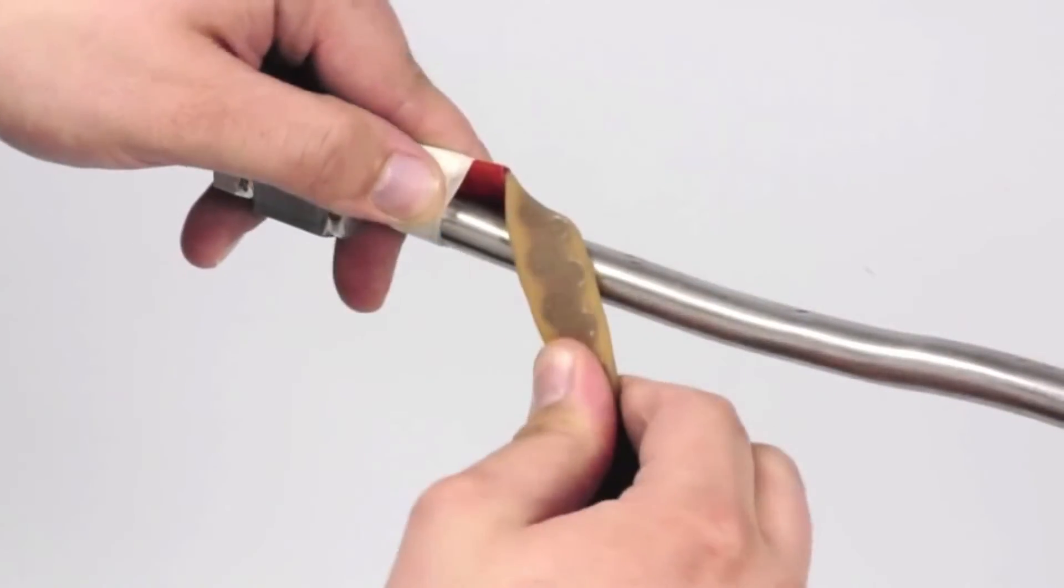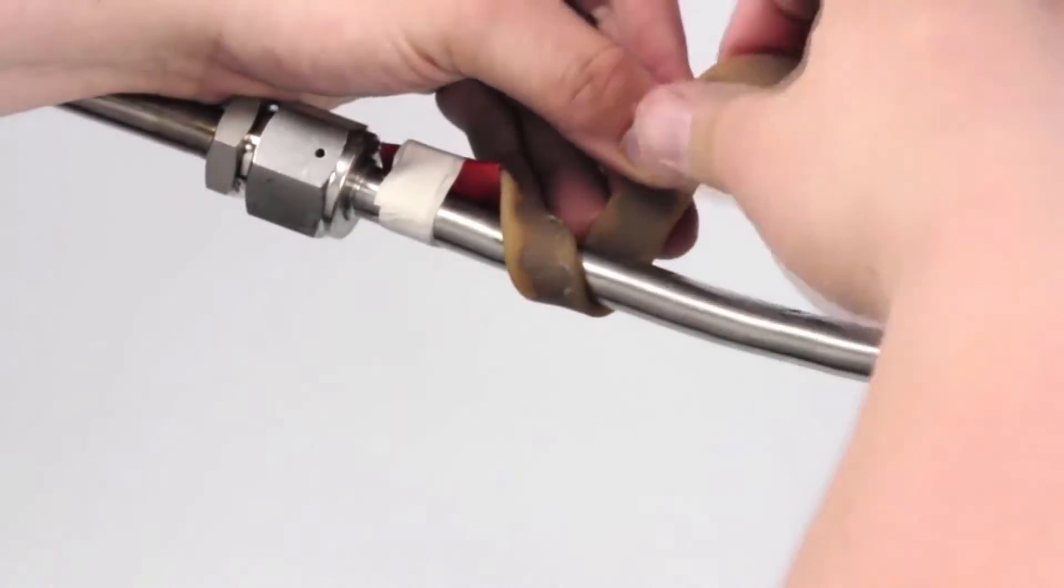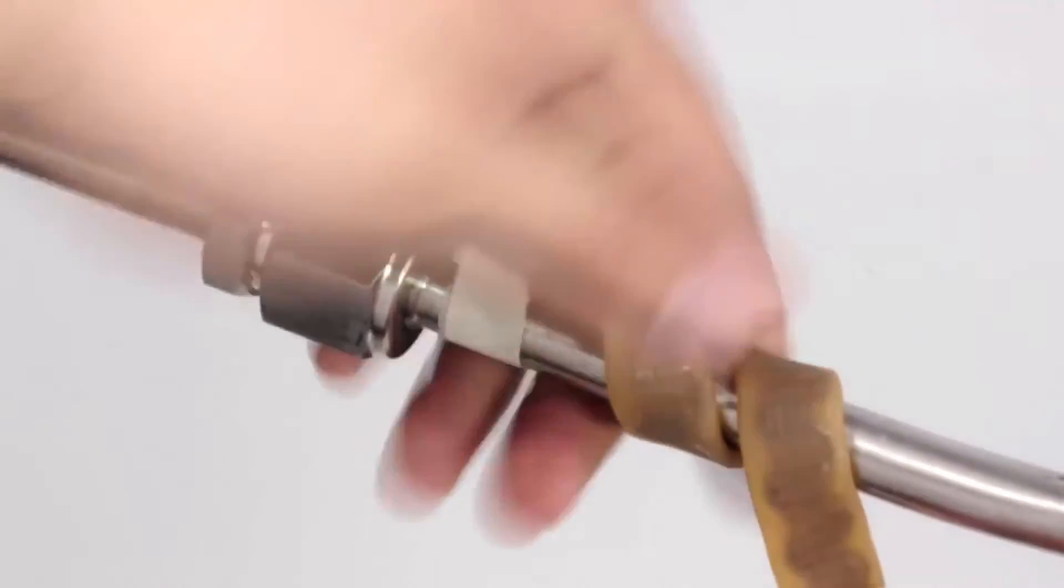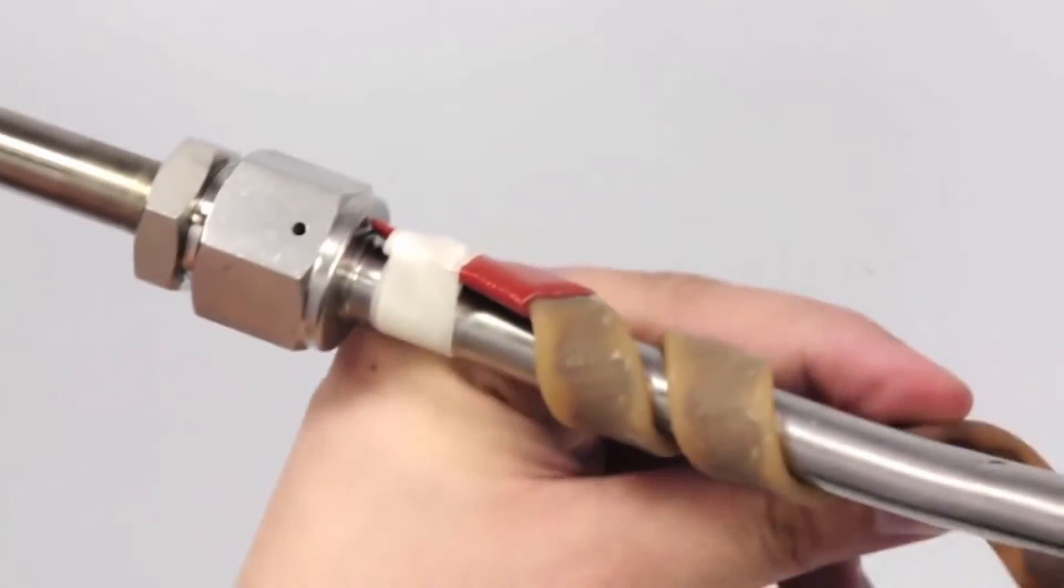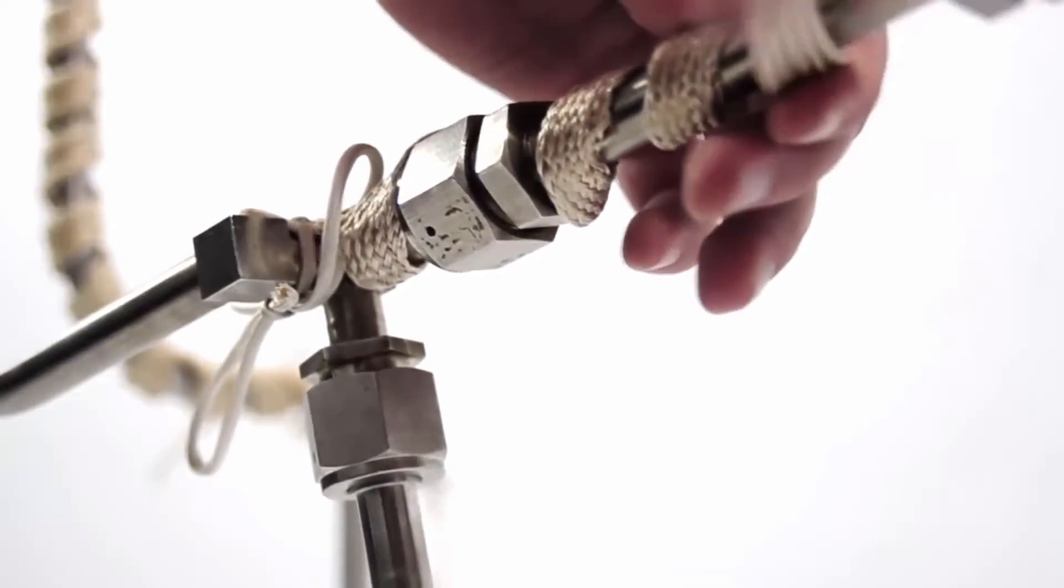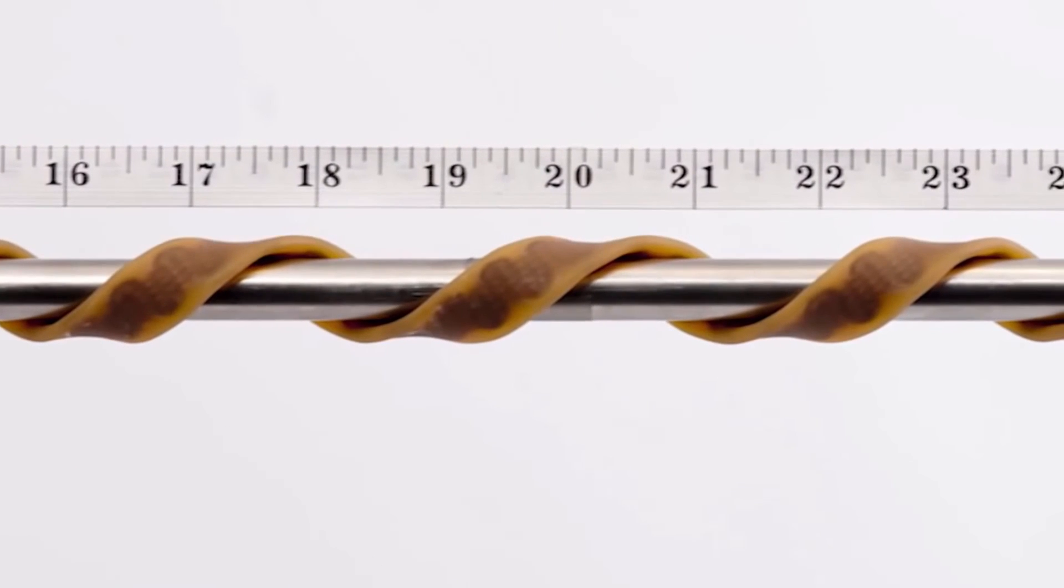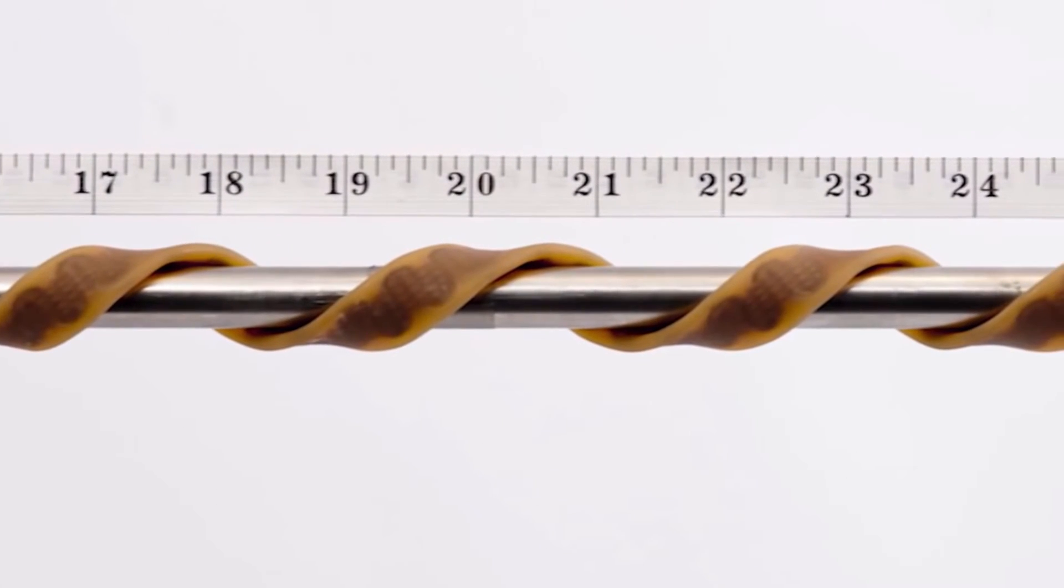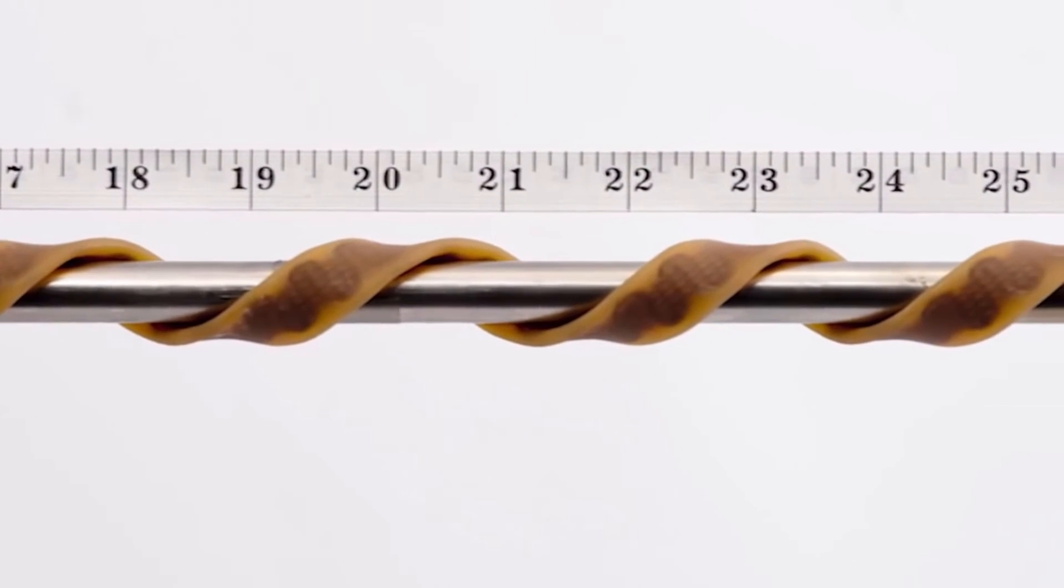Spiral wrap the heating tape onto the surface that will be heated. Make sure the length of one entire side of the heating tape is in full contact with the surface. The distance between spiral wraps is dependent on the uniformity requirements and the amount of available heating tape.